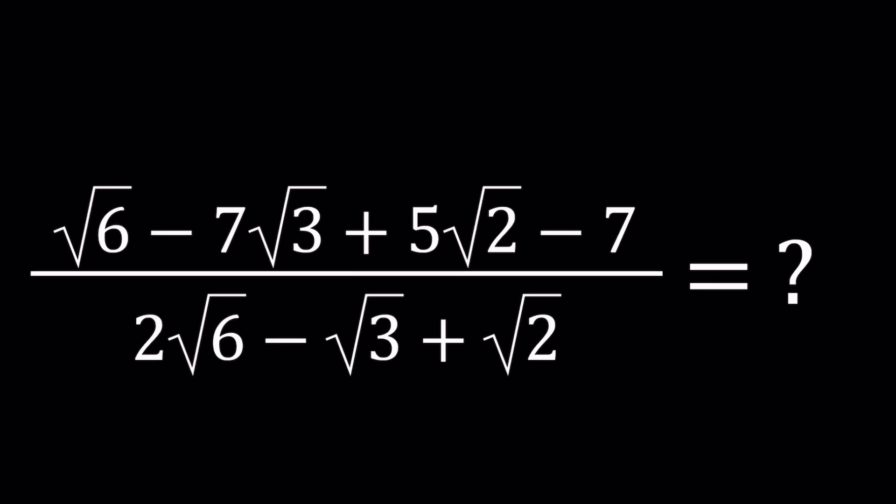Hello everyone. In this video we're going to be simplifying a nice radical expression. We have the square root of 6 minus 7 times the square root of 3 plus 5 times the square root of 2 minus 7, all over 2 times the square root of 6 minus the square root of 3 plus the square root of 2.